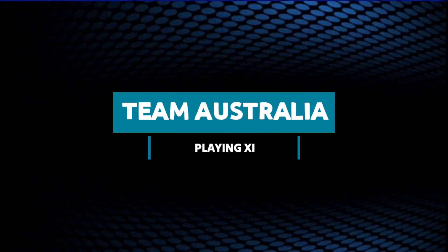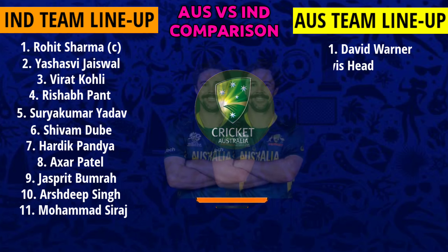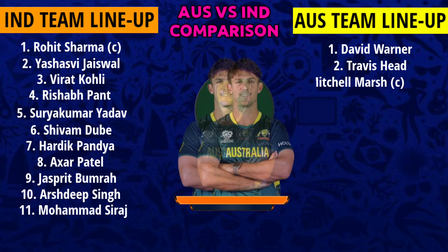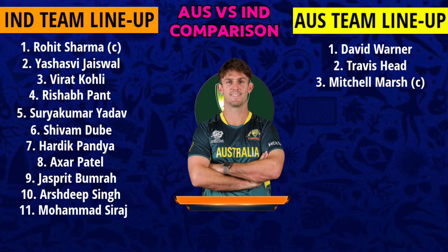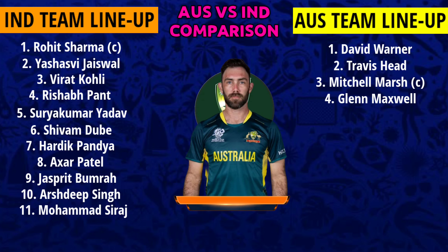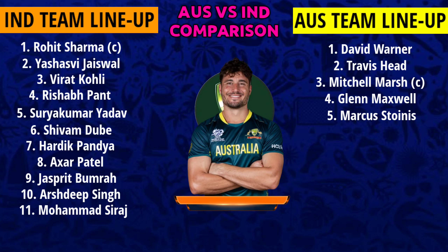Timo Stelia best playing 11: Number 1 David Werner, Number 2 Travis Head, Number 3 Mitchell Marsh, Number 4 Glenn Maxwell, Number 5 Marcus Astonis.